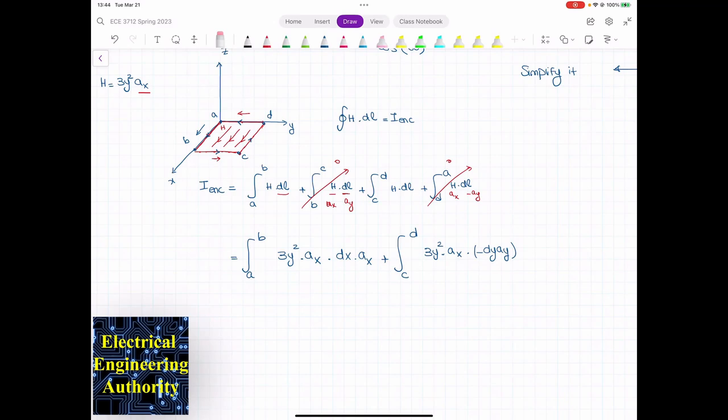Or negative? Oh sorry, sorry. I was looking at an incorrect thing. We're going from C to D, so that is negative dx ax. Sorry about that.